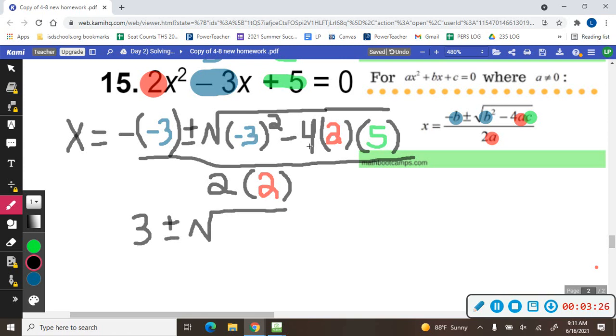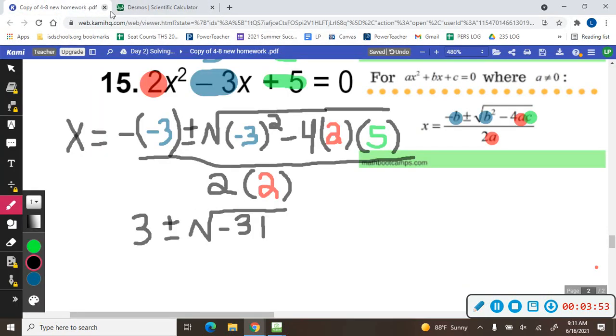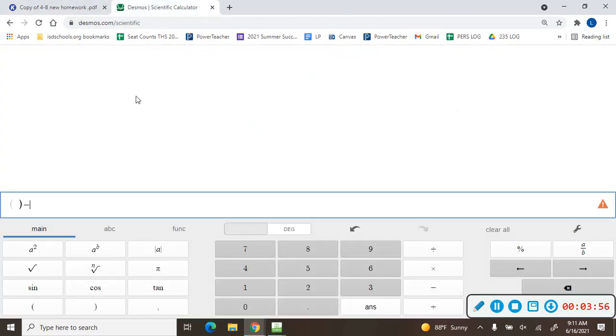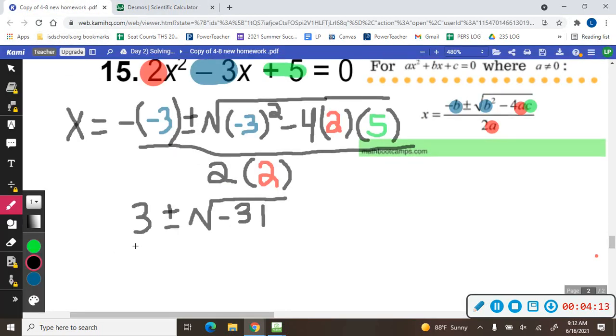And then this part, I would just do all that either in your head or just type it in a calculator. Negative 3 squared is 9. 4 times 2 times 2 is 8 times 5 is 40. 9 minus 40 is negative 31. Or you could type that in your calculator. Negative 3 squared minus 4 times 2 times 5. And notice I get negative 31 in case you're not good with computations. And then, of course, 2 times 2 is 4.